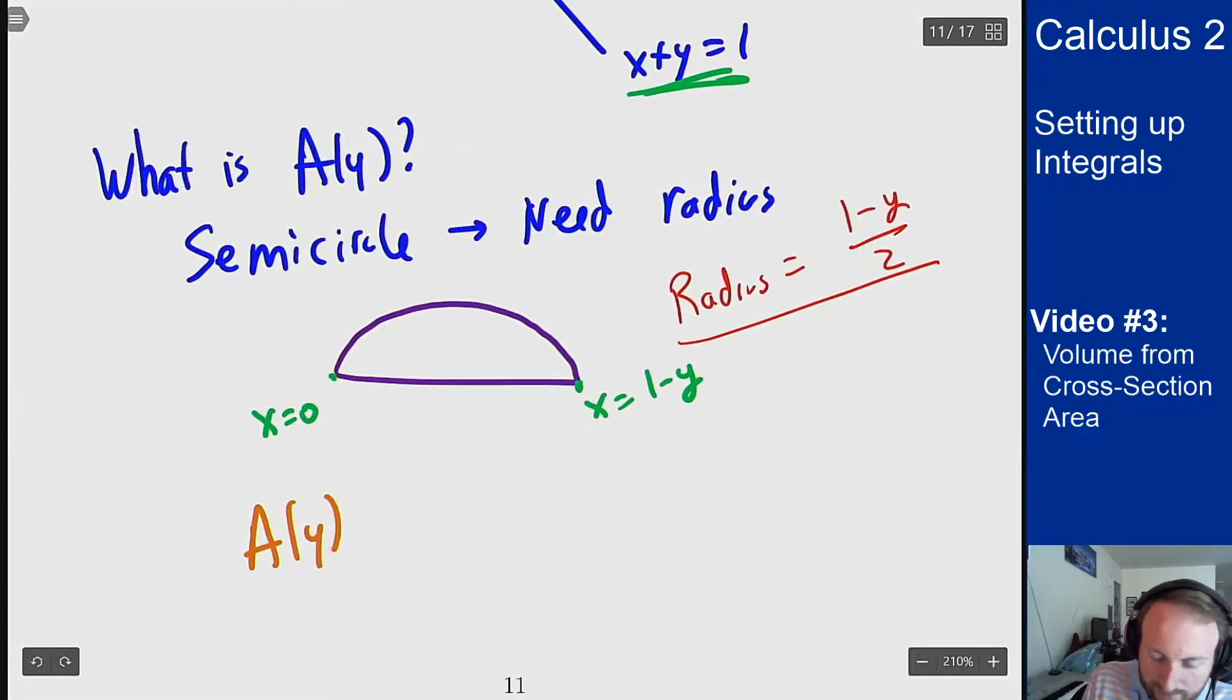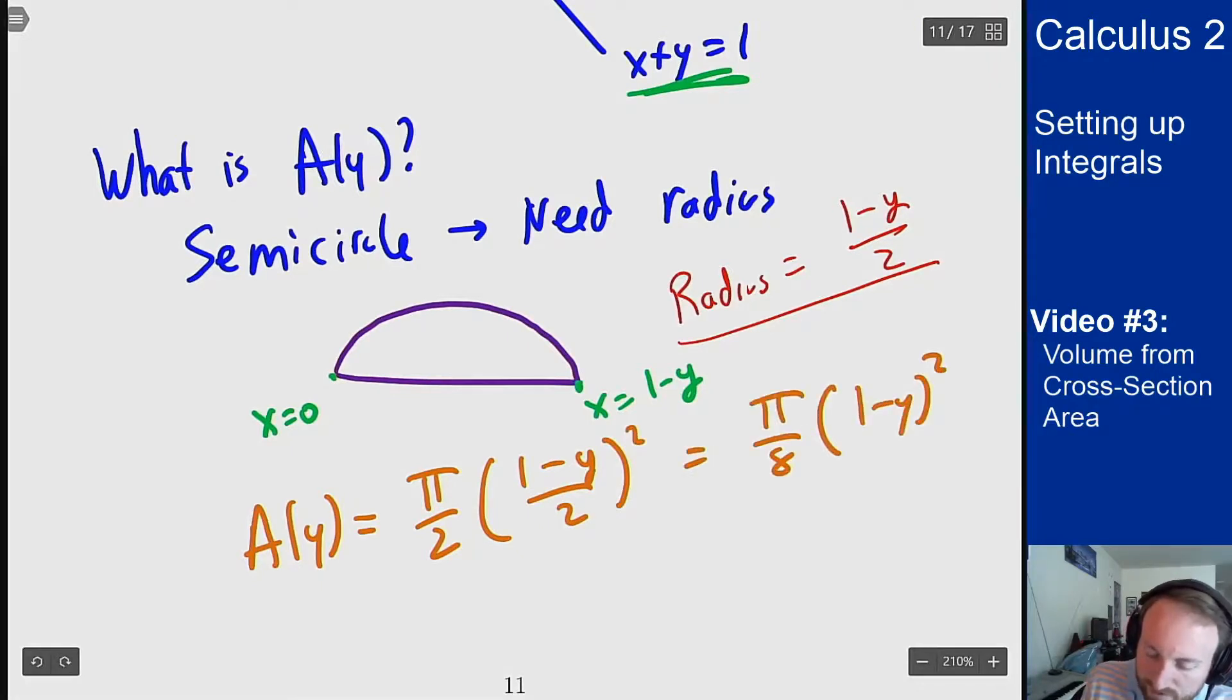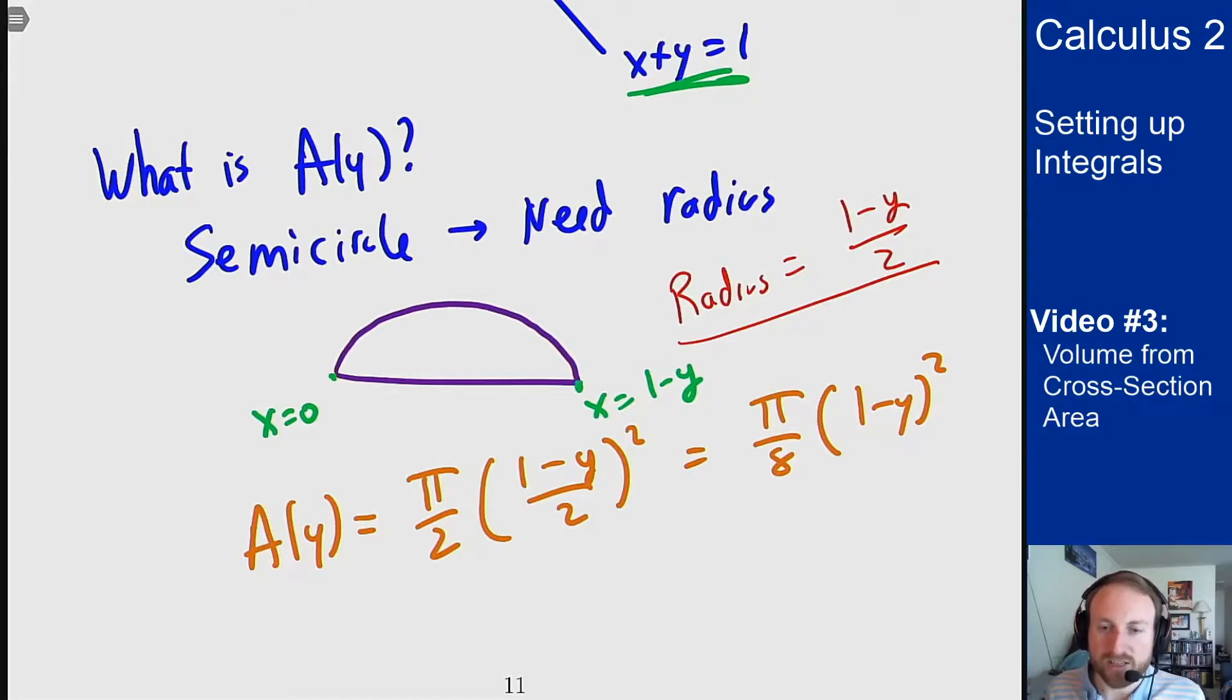So if that's the radius I can then find the area of the semicircle. A of y should be pi over 2 times r squared, which will be pi over 8 times (1 minus y) squared. And then to find the volume I just need to integrate this.